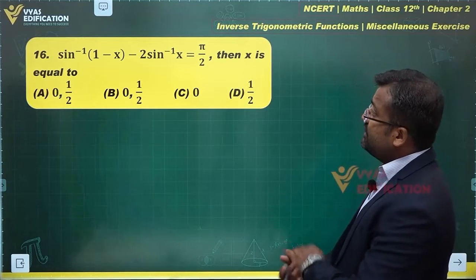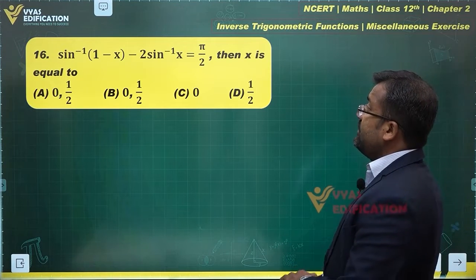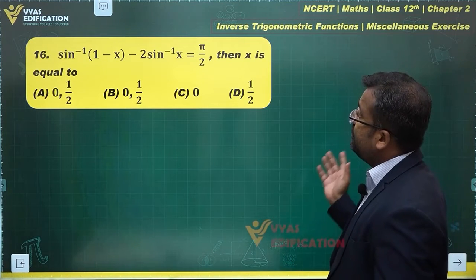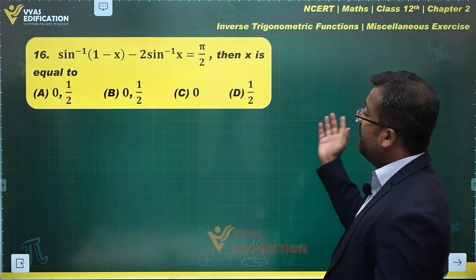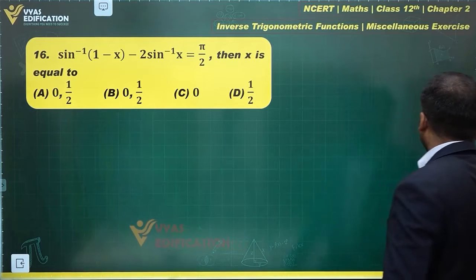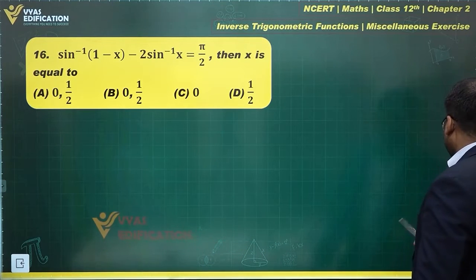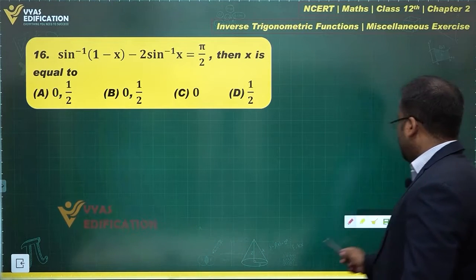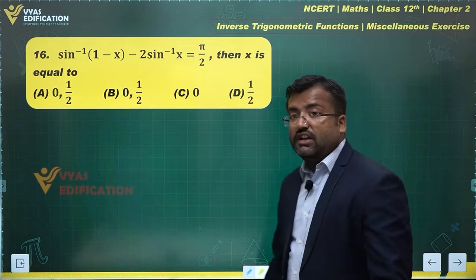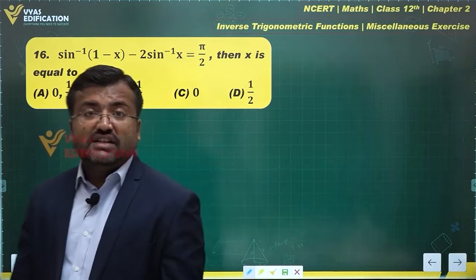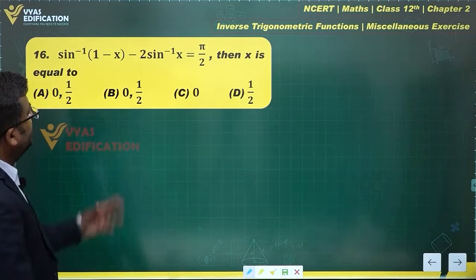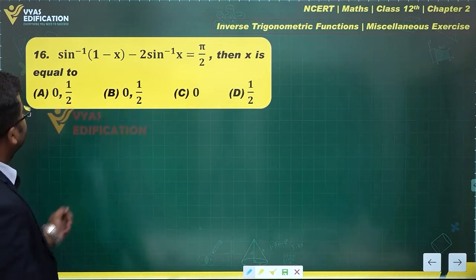Let's take a look at this question: sin⁻¹(1 - x) - 2sin⁻¹(x) = π/2, then x is equal to what? How do we go about solving this one? Since this is an equation based on inverse trig, let's try to solve this directly among principal values.